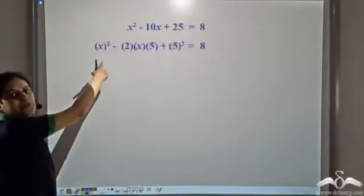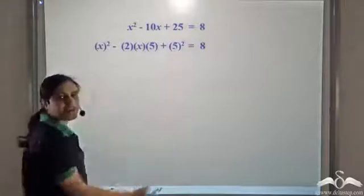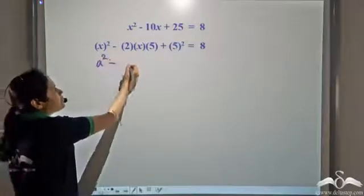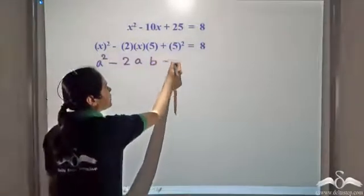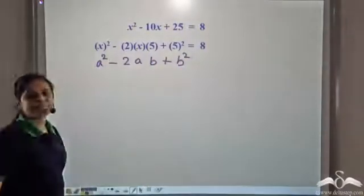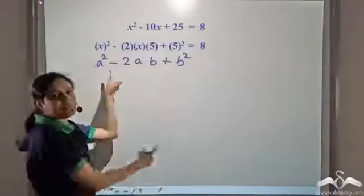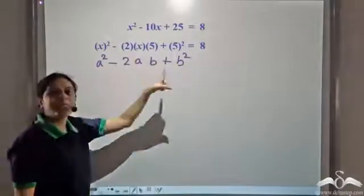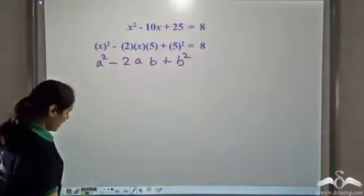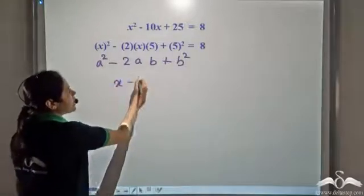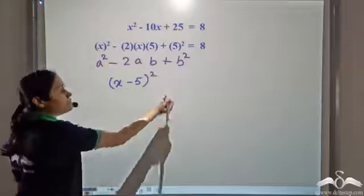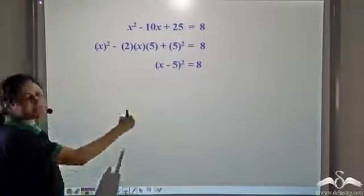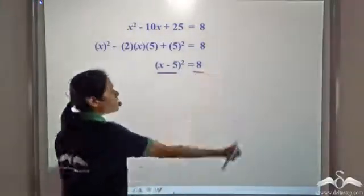Notice that x² − 10x + 25 is x² − 2·x·5 + 5². We can compare this with a² − 2ab + b², which equals (a − b)². So the left hand side can be written as (x − 5)², and the equation becomes (x − 5)² = 8.